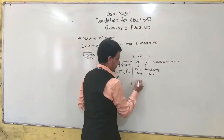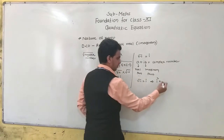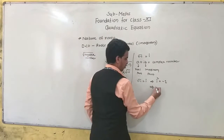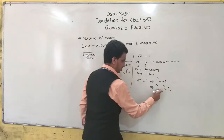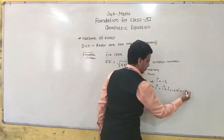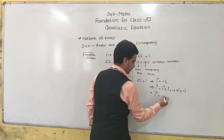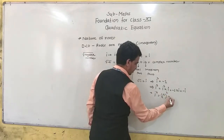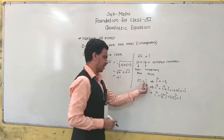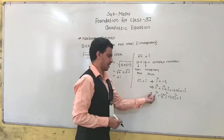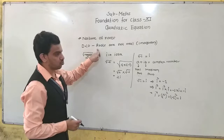Root of minus 1 is i. So i squared is equal to minus 1. For i cubed, we write i squared into i, which gives minus 1 times i, so minus i. And i to the power 4 is (i squared) squared, which is (minus 1) squared, equal to 1. So: √(−1) = i, i² = −1, i³ = −i, i⁴ = 1.